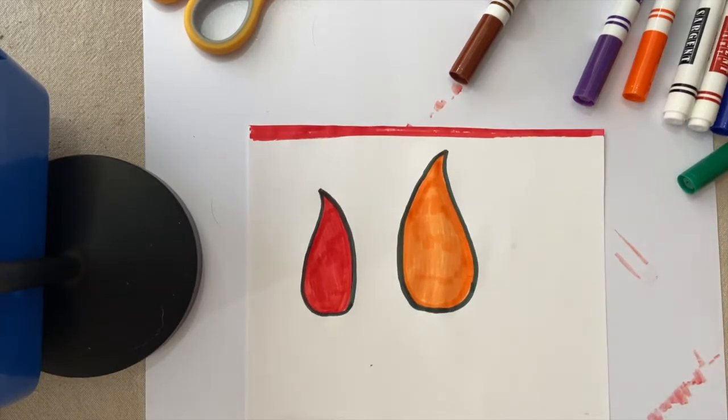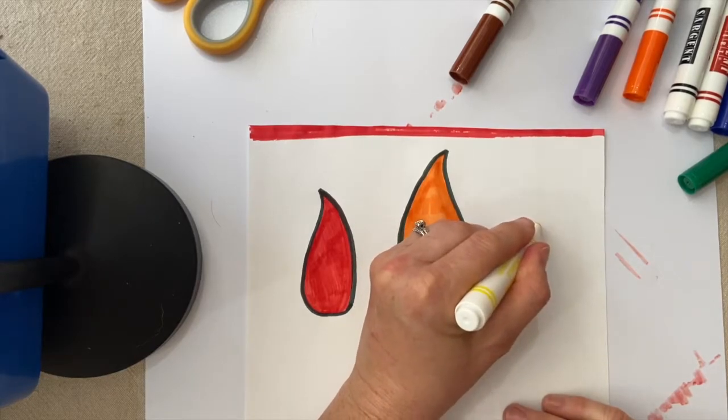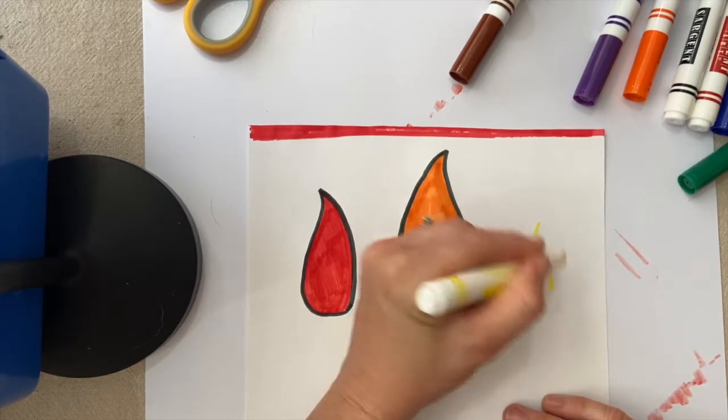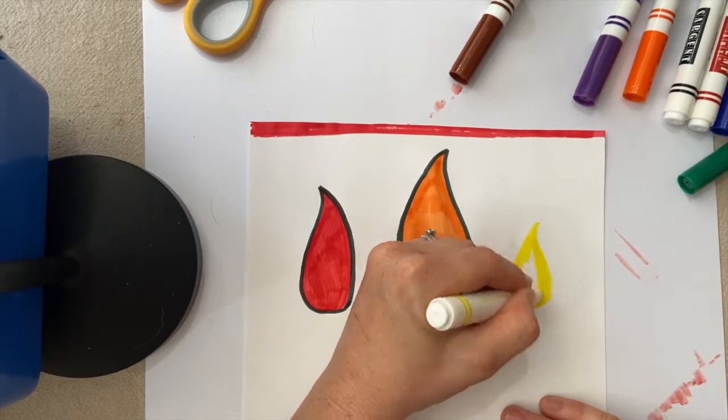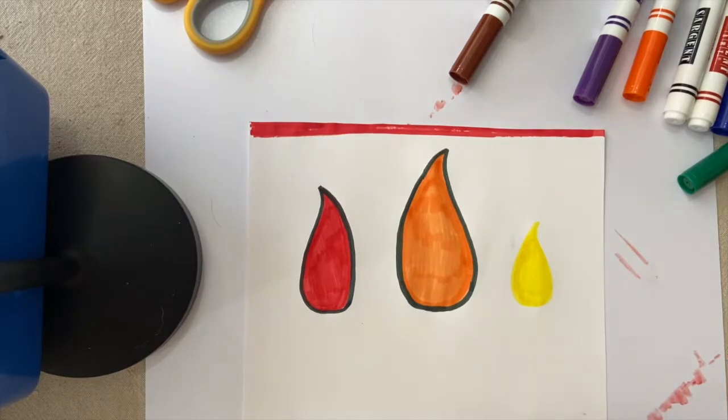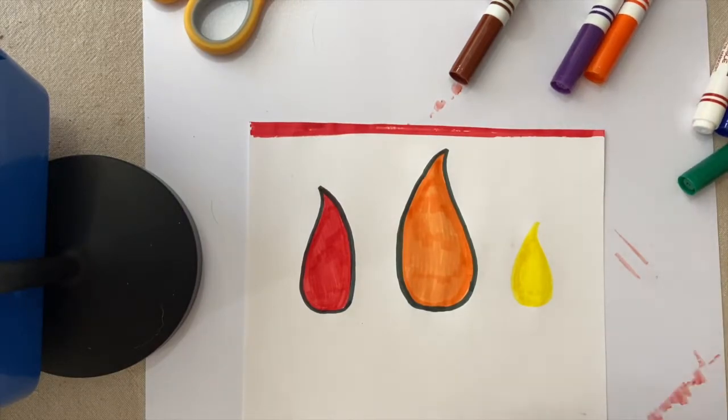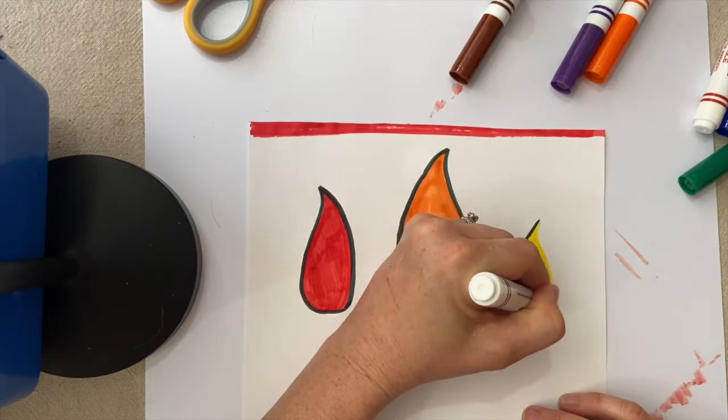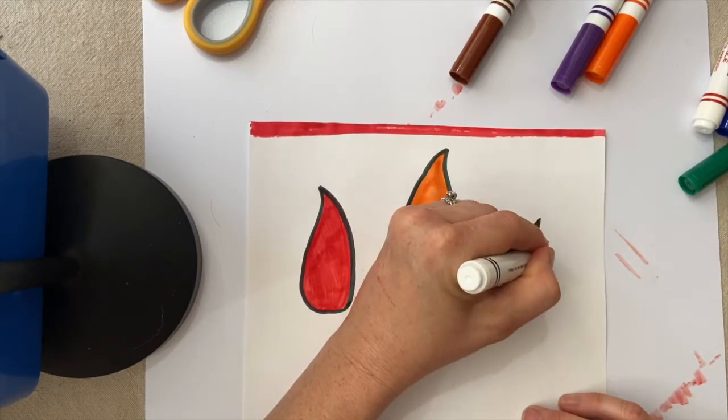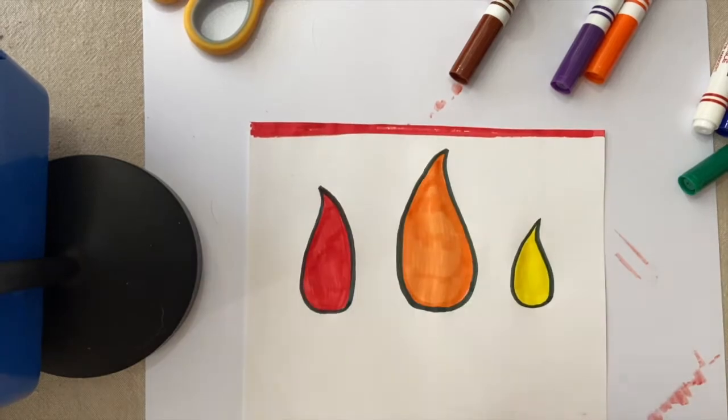Now we'll grab our yellow marker and we'll finish off our flame by drawing the smallest of the three and this one's going to face the same direction as the orange one did. Make a nice small one and then we'll fill that in, color that in and we'll do the same thing with the black marker once again. We will trace around it.